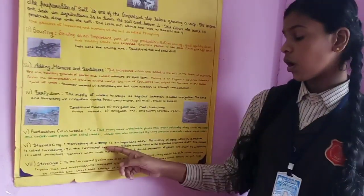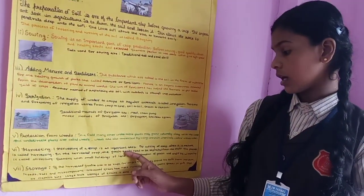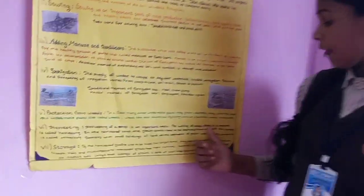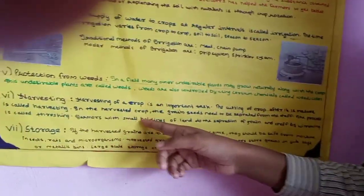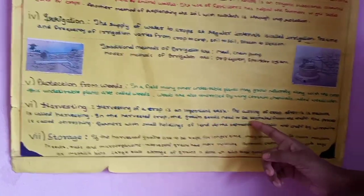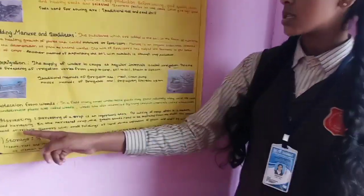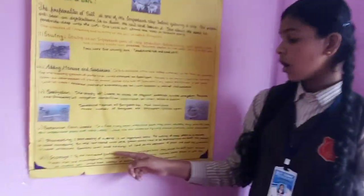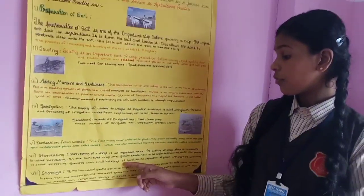The sixth one is harvesting. Harvesting of a crop is an important task. The cutting of the crop after maturity is called harvesting. In a harvested crop, the grain seeds need to be separated from the chaff. This process is called threshing.